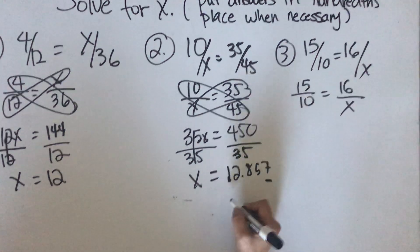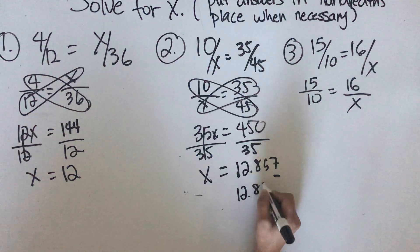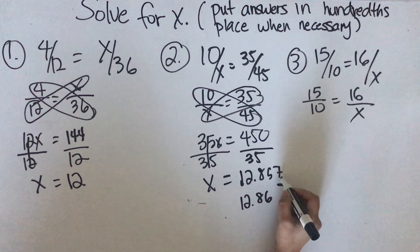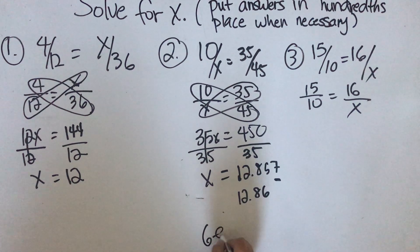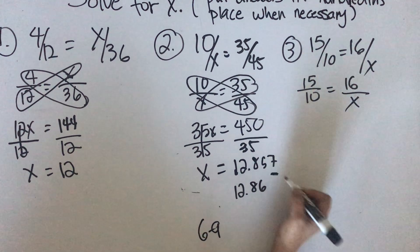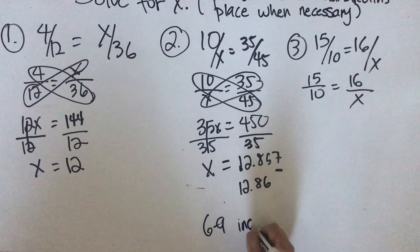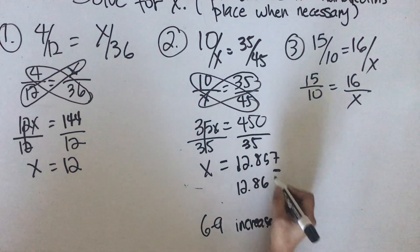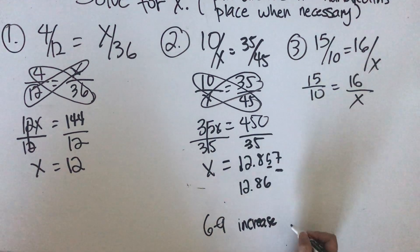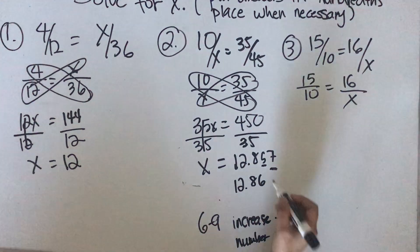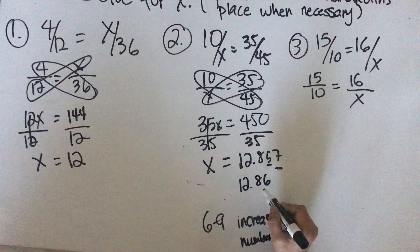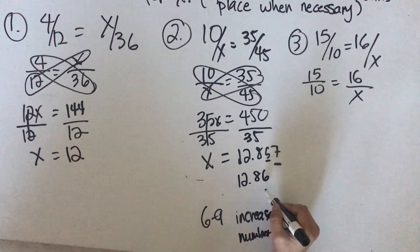So the answer here is 12.86 because if from 6 to 9, if this number is from 6 to 9, it increase this hundredths place by one number. So that's why the answer here is 12.86.